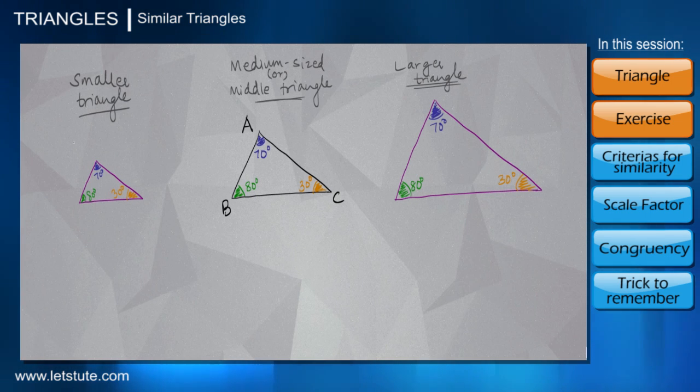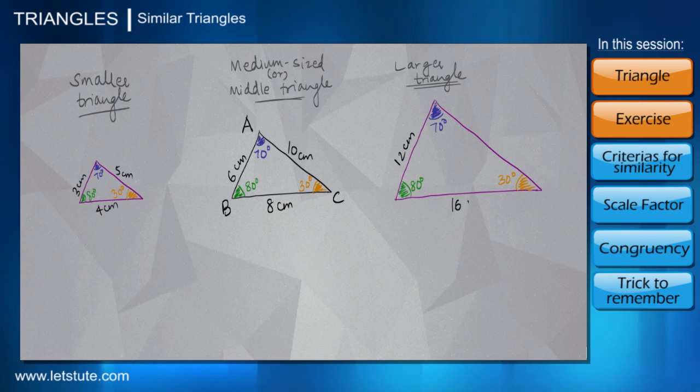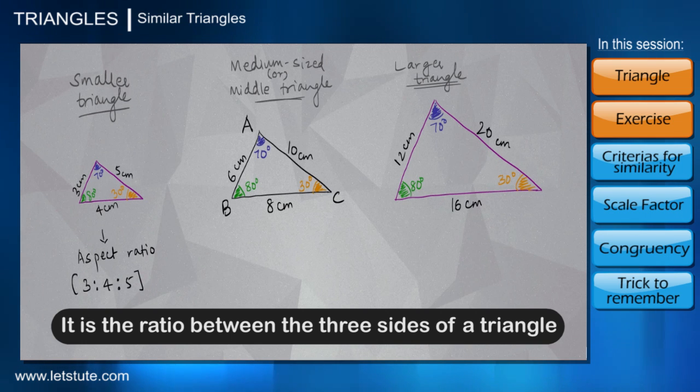What I mean by aspect ratio is, let's say we assign their sides some lengths. If the smaller triangle is 3, 4, 5, then the medium triangle is 6, 8, 10, and the larger triangle is 12, 16, and 20. On what basis did I assign them these lengths? If I say that the smaller triangle is 3, 4, 5, then this is the aspect ratio of the smaller triangle, because it is a ratio within a triangle of its sides.